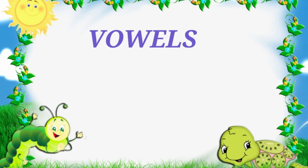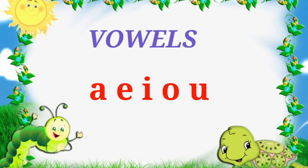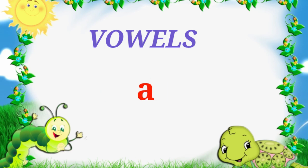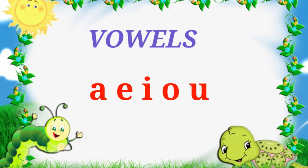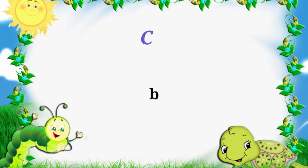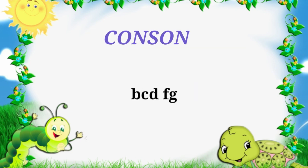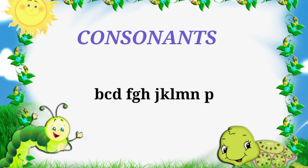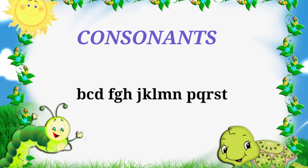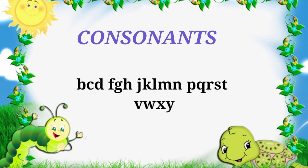So now you know very well that A, E, I, O, U are vowels. What are vowels? A, E, I, O, U. And all the rest of the alphabet sounds are called consonants.